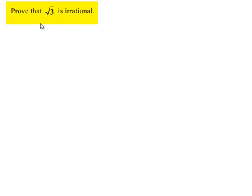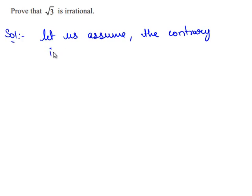Now, we shall prove that root 3 is an irrational number. So, let's move to the solution. To prove root 3 is an irrational number, let us assume the contrary, that is root 3 is a rational number.